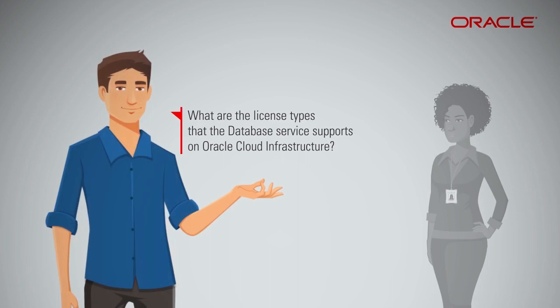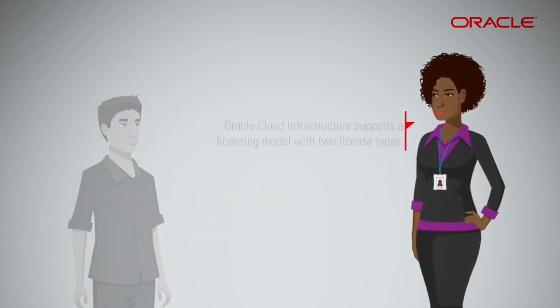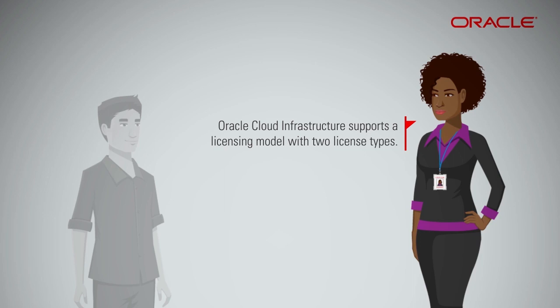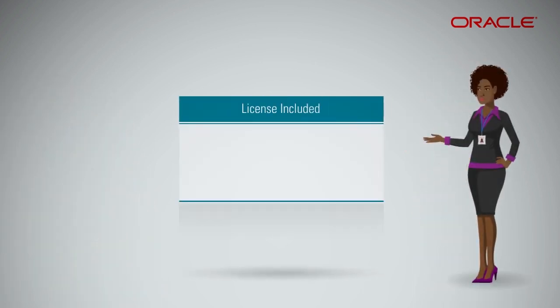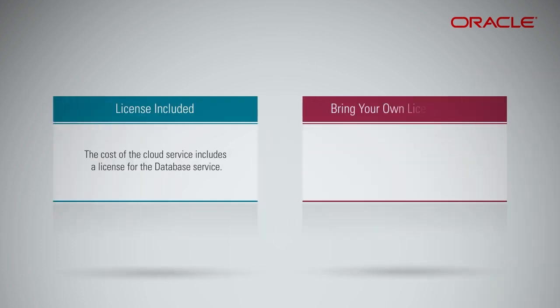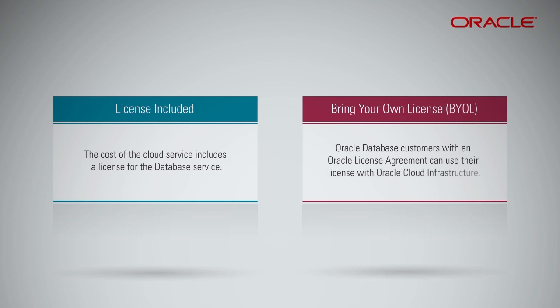What are the license types that the database service supports on Oracle Cloud Infrastructure? Oracle Cloud Infrastructure supports a licensing model with two license types. With license included, the cost of the cloud service includes a license for the database service. With Bring Your Own License, BYOL, Oracle Database customers with an Oracle License Agreement can use their existing license with Oracle Cloud Infrastructure.